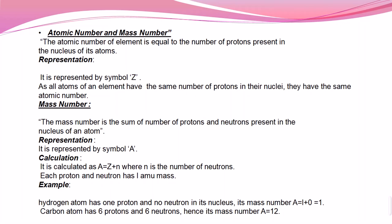The mass number is the sum of the number of protons and neutrons present in the nucleus of an atom. It is abbreviated as A. The mass number is represented by the symbol capital A.